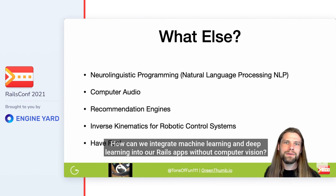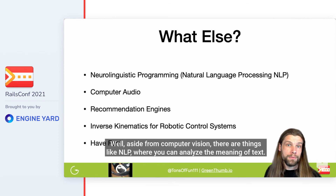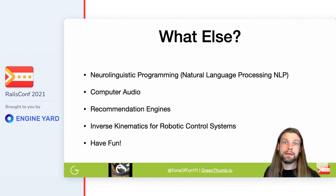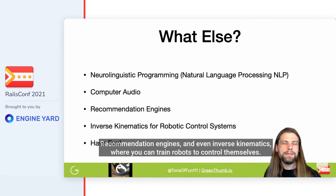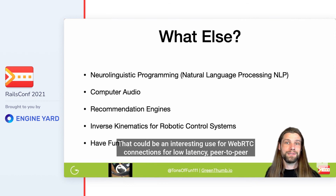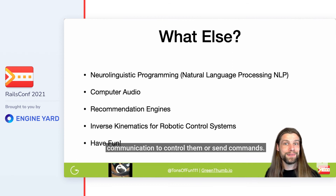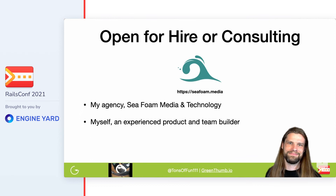How can we integrate machine learning and deep learning into our Rails apps without computer vision? Aside from computer vision, there are things like NLP where you can analyze the meaning of text, computer audio where you can analyze sound, recommendation engines, and even inverse kinematics where you can train robots to control themselves. That could be an interesting use for WebRTC connections for low-latency peer-to-peer communication to control them or send commands.